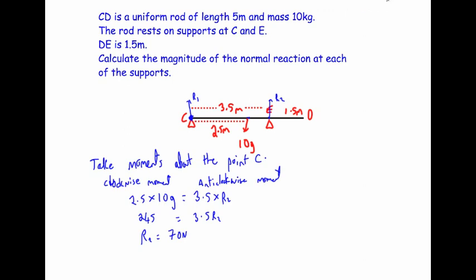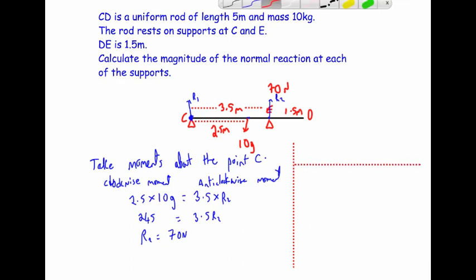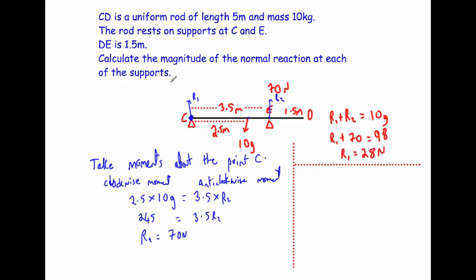Now I need to find R1. One simple approach is forces up equal forces down. Forces up are R1 + R2, and forces down are 10g = 98 newtons. So R1 + 70 = 98, which gives R1 = 28 newtons.